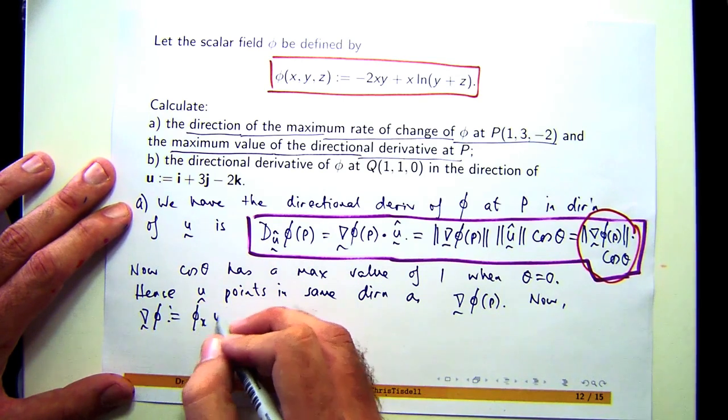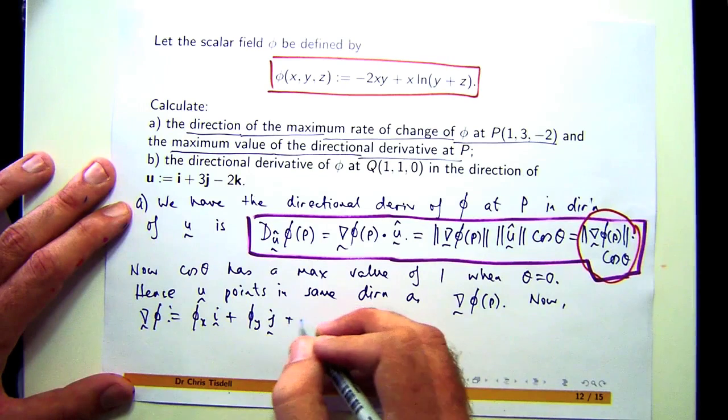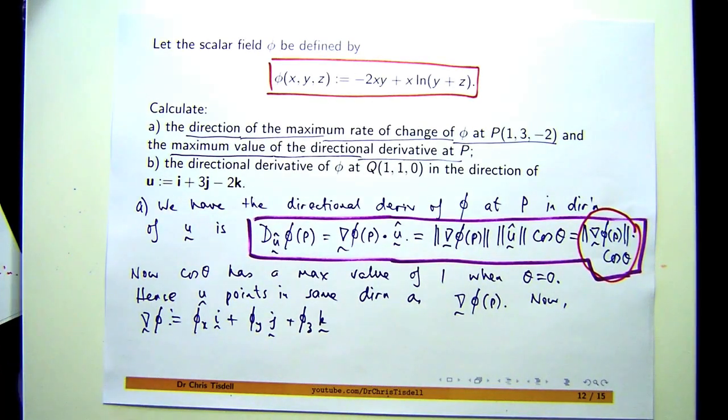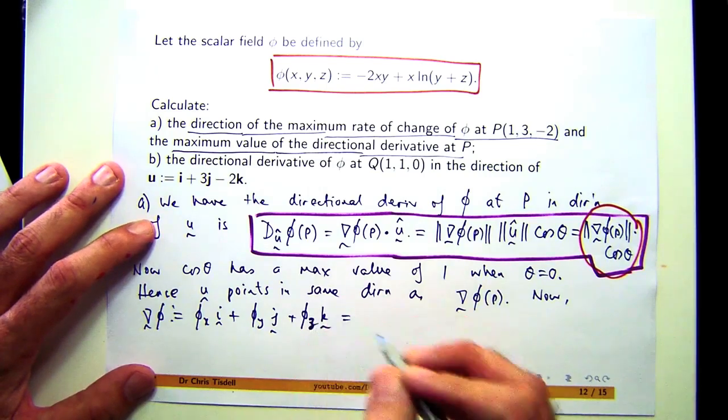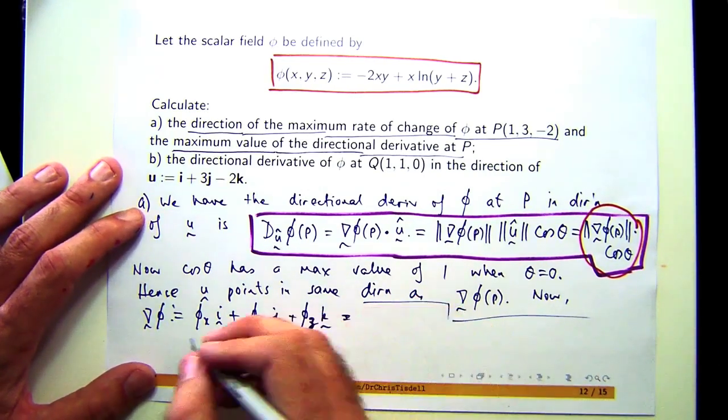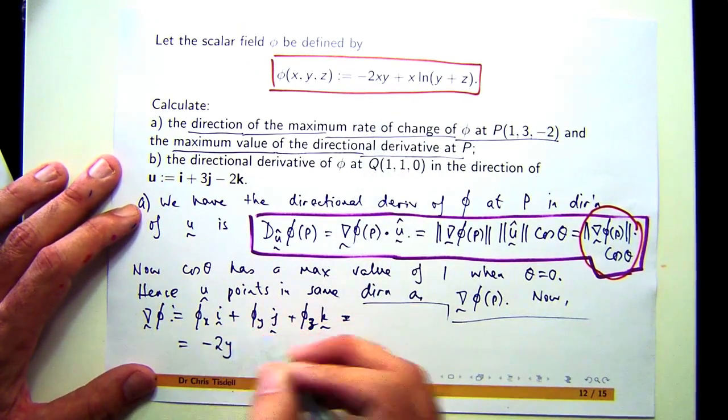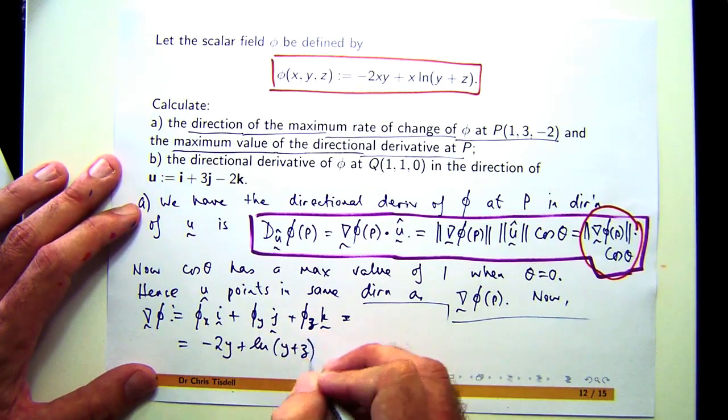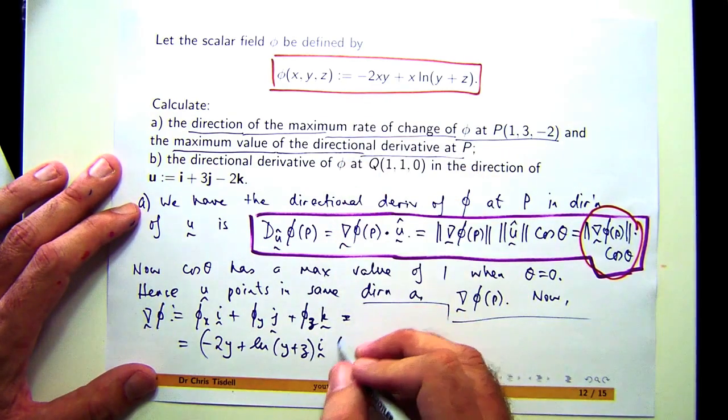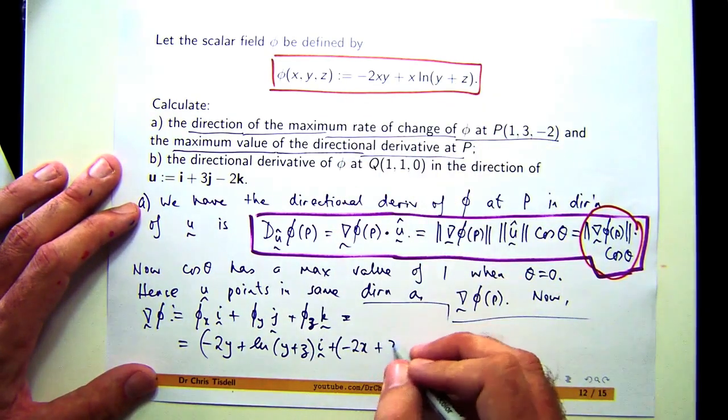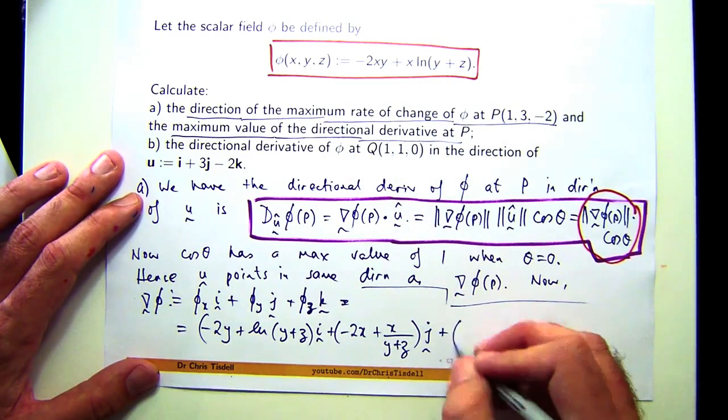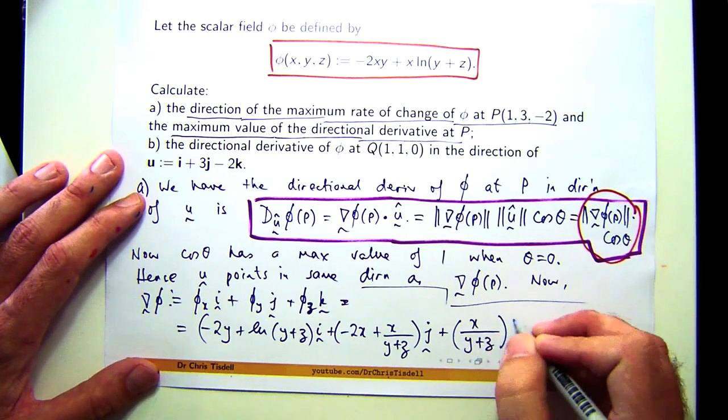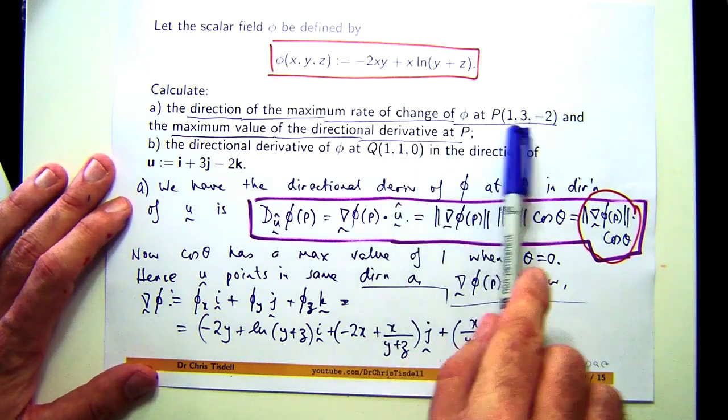We know that the gradient is just partial derivatives written in as a vector. So let's go up here and differentiate with respect to x, with respect to y, and with respect to z, and write them as a vector. We'll get a new vector field out. So φ_x is going to be something like -2y + ln(y + z). φ_y is going to be something like -2x + x/(y + z). And φ_z, well, that's going to be 0, and that's going to give you something similar to the previous j part. So we're interested in this at the point P, the given point P.